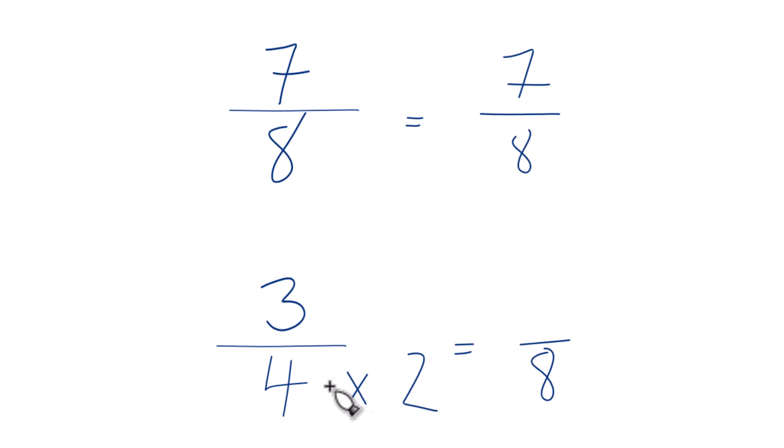And now, since we multiplied the denominator down here by 2, we need to multiply the numerator by 2 as well. That's because 2 over 2 is 1, so we're just multiplying by 1. We don't change the value, just how it's written.